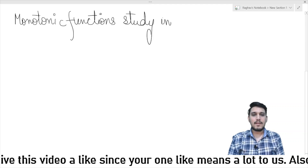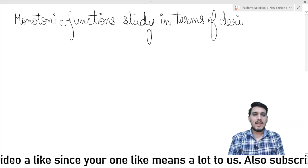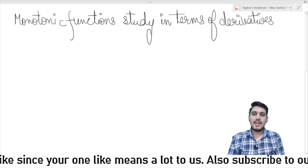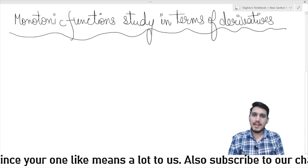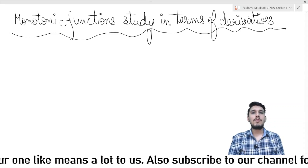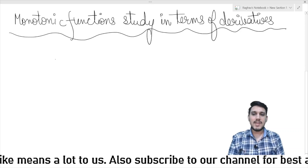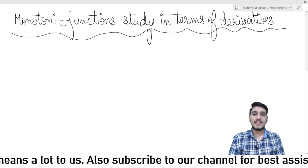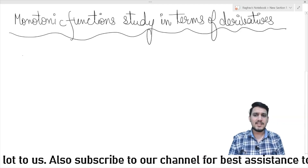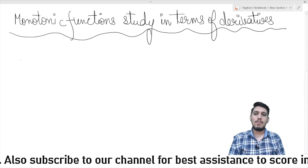Now we will study increasing and decreasing functions in terms of derivatives. There are some conditions that imply that functions are increasing or decreasing. I want you to first write down the conditions, and then I will explain where they come from. This is the best way so that you can remember the conditions. We will understand where each condition comes from.